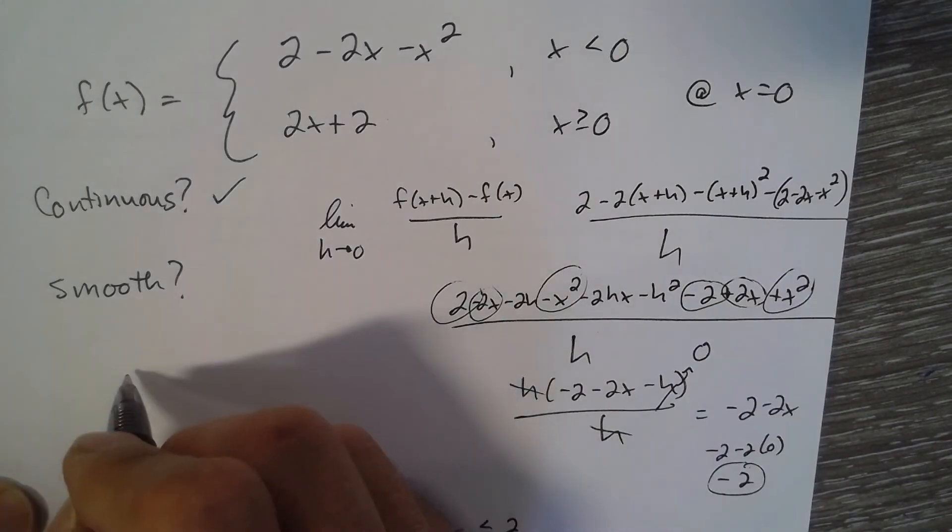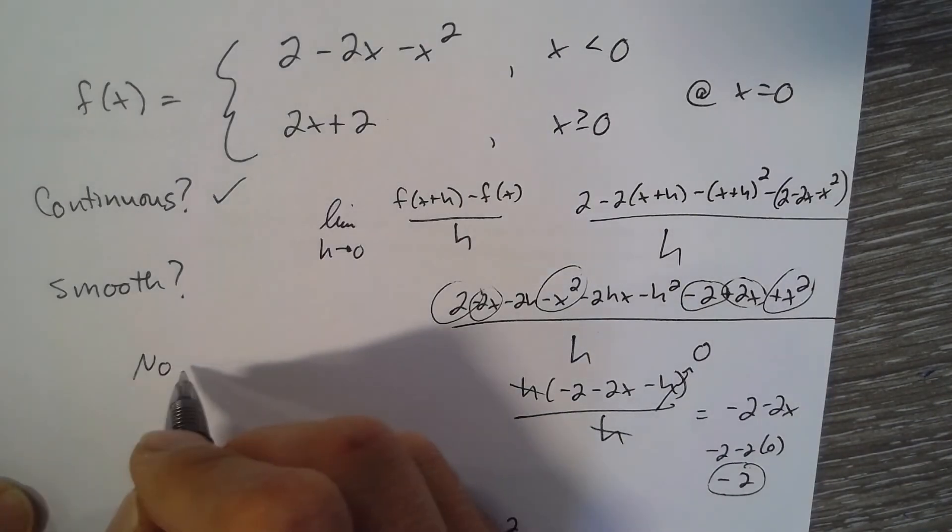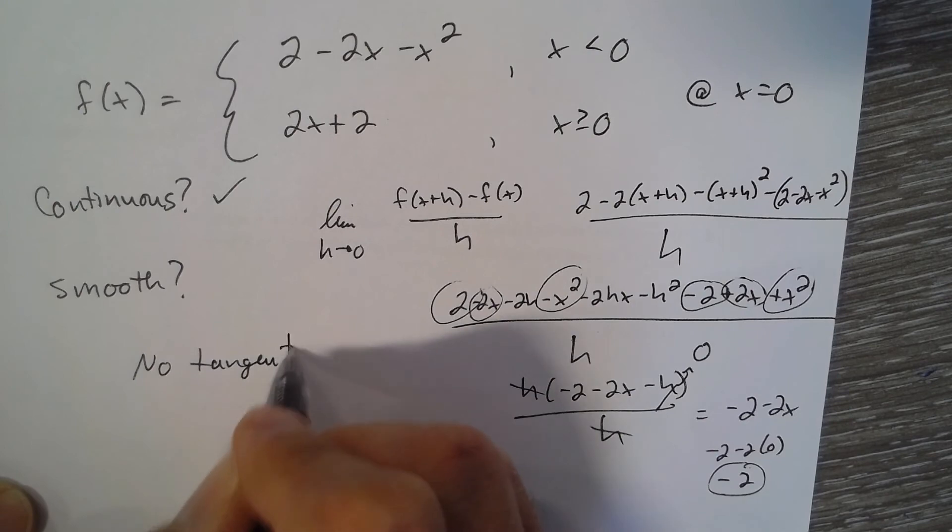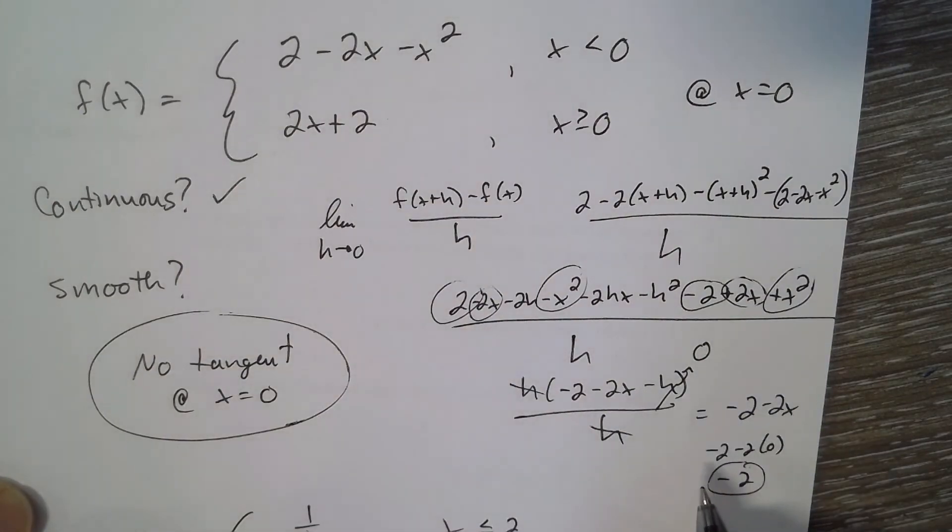The answer: No, there is no tangent at x equals zero.